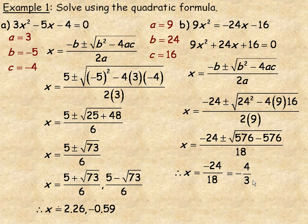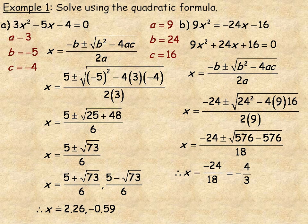So the only solution here is negative 4 thirds. Often quadratic equations have two solutions, but once in a while you only get one, as in this example.